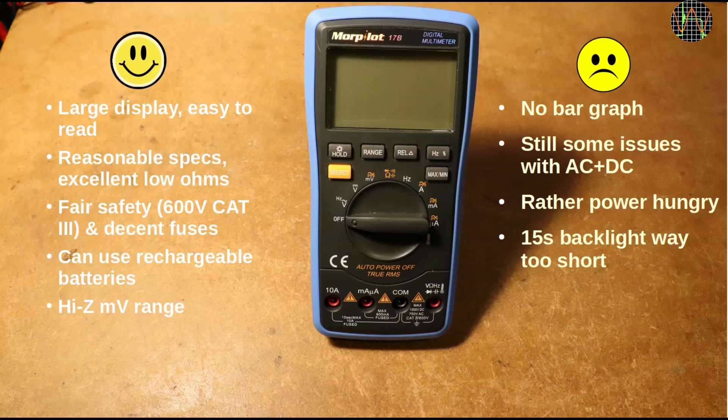Although I rather have AA or AAA batteries, the 9V battery for the Morpilot can at least be rechargeable and the meter can make full use of its capacity. Lastly, the high Z millivolt range which is a useful feature to have and quite unexpected in a meter of this price class.